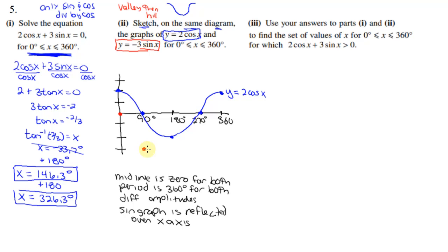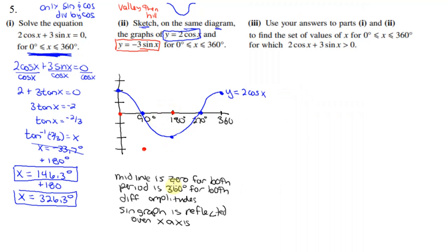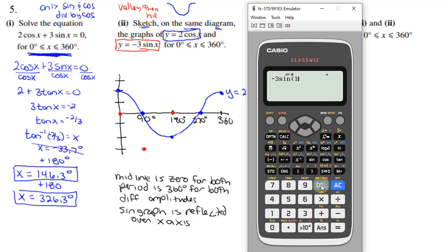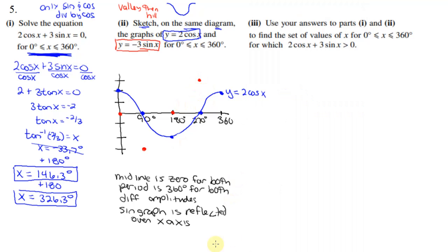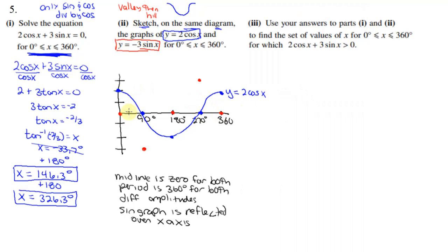And then we put a 90 in and we get negative 3. We get 180. We put that in there and we get a 0. We put 270 in and we get positive 3. And then we put 360 in and we get 0.